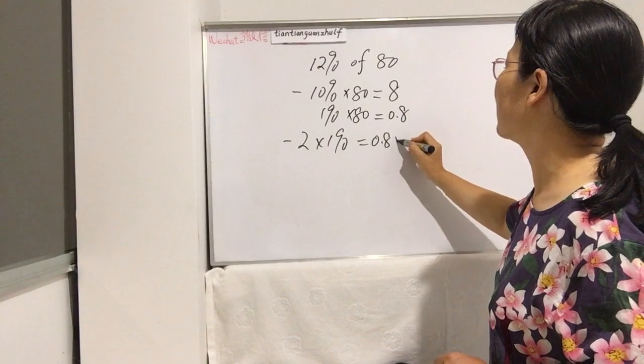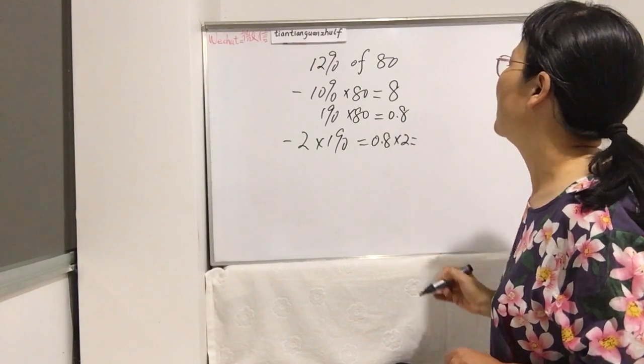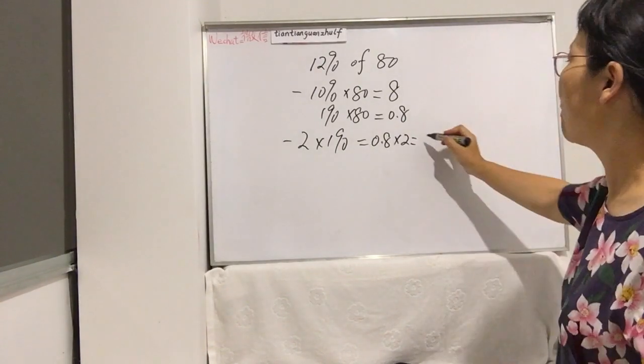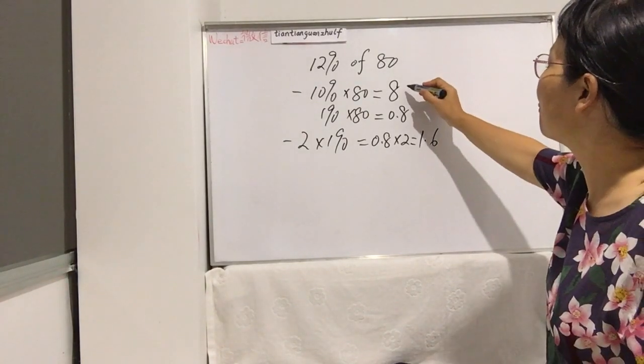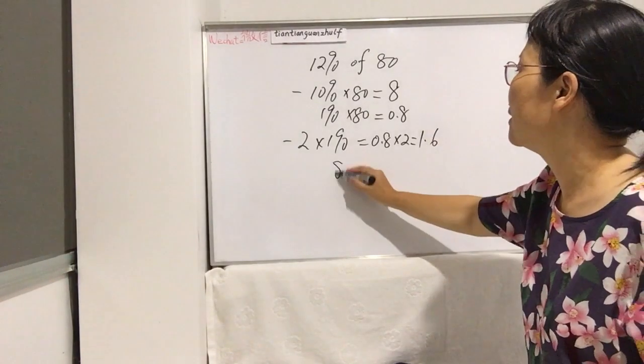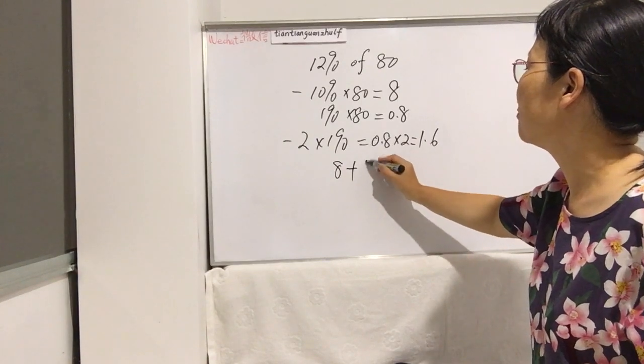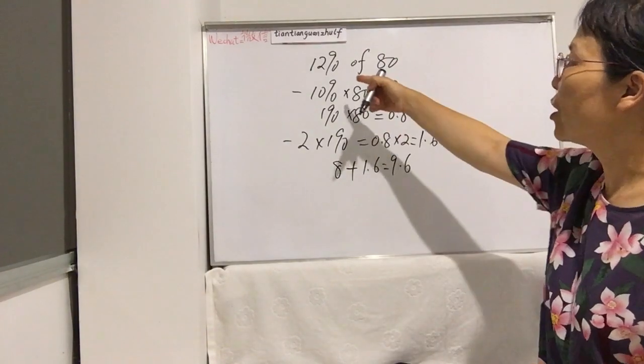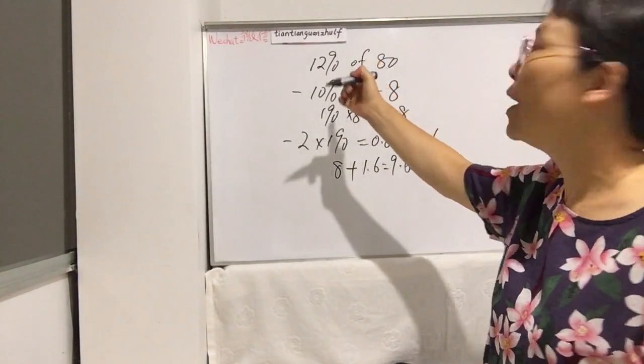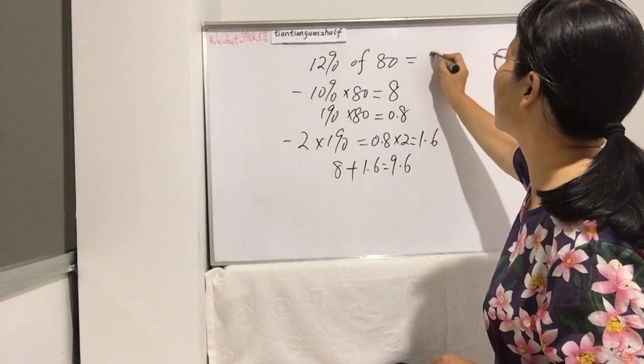And this time, because of 12%, it's actually this plus together. So let's see: 0.8 times 2 is 1.6.